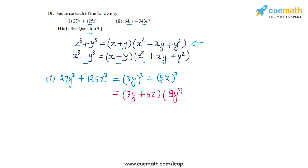So that's 9y² minus xy, which is 15yz, plus y², which is 25z². This is the factored form of the first expression.